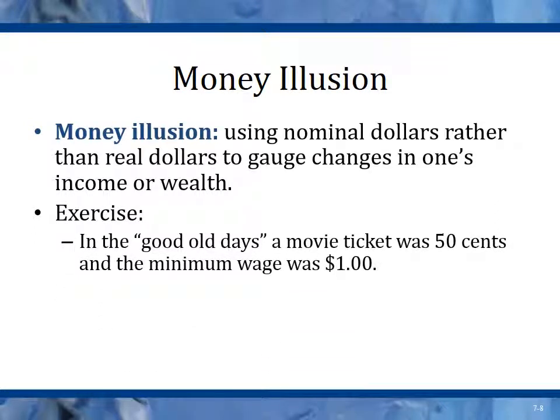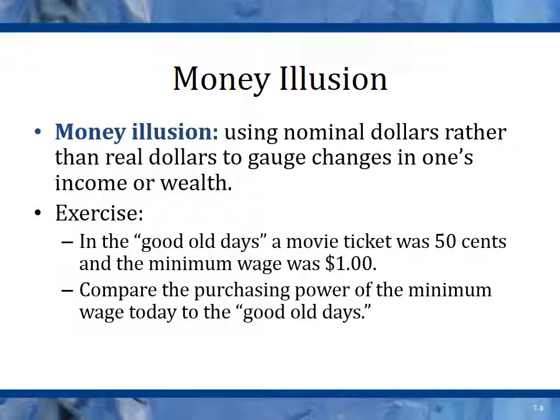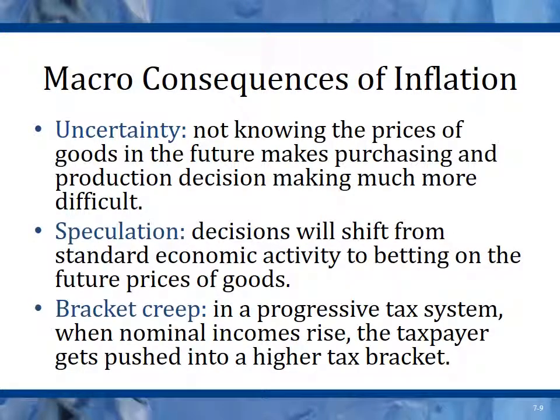The money illusion is using nominal dollars rather than real dollars to gauge changes in one's income or wealth. Quite often we say I made fifty thousand dollars last year and fifty-one thousand dollars this year — I'm doing better. But that's only a two percent increase, and if inflation is at three percent, you're actually going backwards. For example, in the good old days a movie ticket was fifty cents and the minimum wage was a dollar. Now a movie ticket is about ten dollars and the minimum wage is less than that — showing the shift in purchasing power.